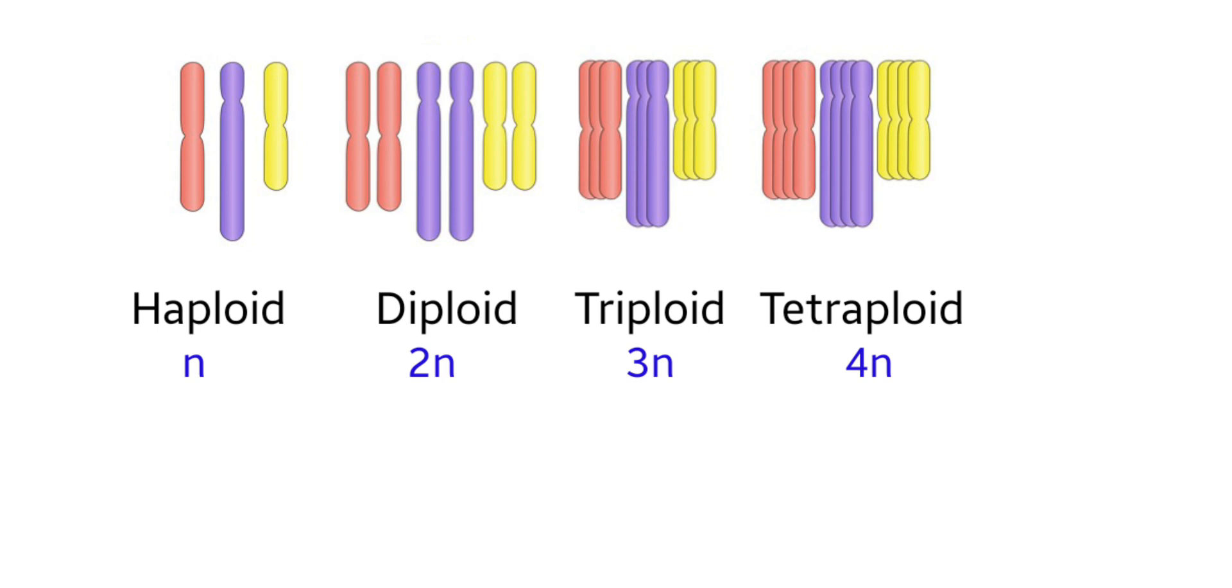A set of chromosomes present in body cells or somatic cells of an organism consists of two homologous pairs of each individual chromosome. Such a cell is said to be diploid. Let's see how a cell divides.